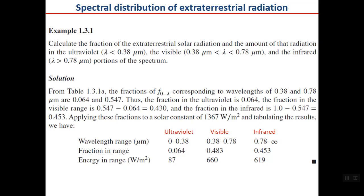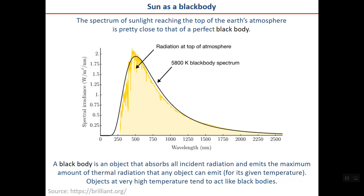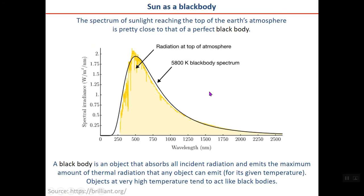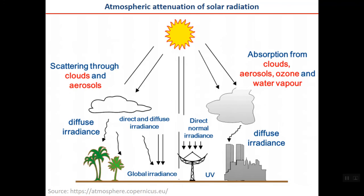When the sun rays pass through the atmosphere there will be some difference. To simulate the sun spectrum, we treat it similarly to a black body — the spectrum of sunlight reaching the top of the earth's atmosphere is close to that of a perfect black body. The black body spectrum, based on physics law, depends on temperature. A black body absorbs all incident radiation and emits the maximum thermal radiation possible at that temperature. Objects at very high temperature tend to act like black bodies.